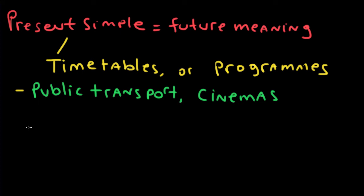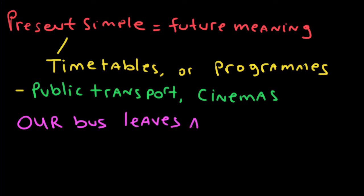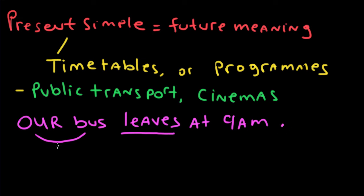We are going to the amusement park. Our bus leaves at 9 a.m. So here, a bus has a timetable, and we use the present simple to talk about future meaning — when the bus will leave. We can say 'Our bus leaves at 9 a.m. tomorrow.' That has a future meaning.